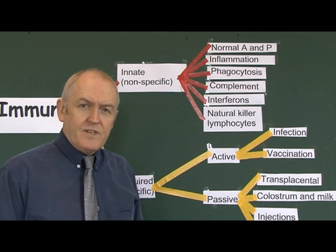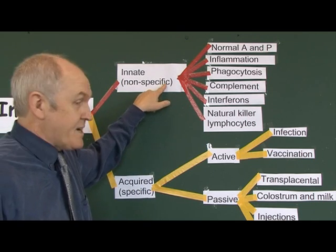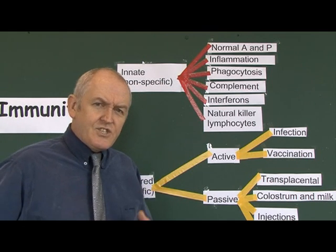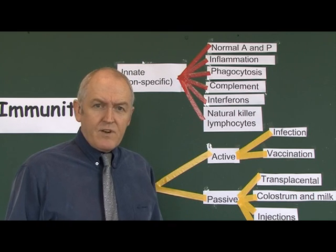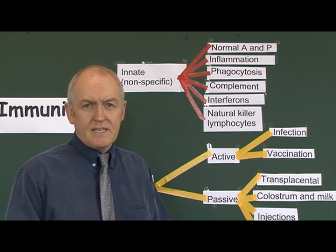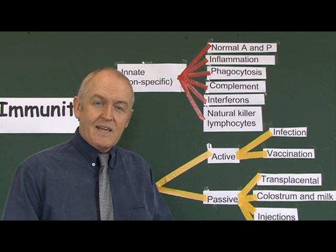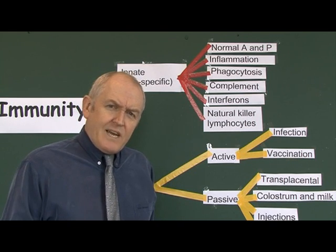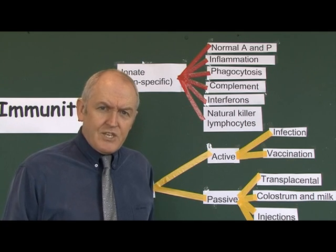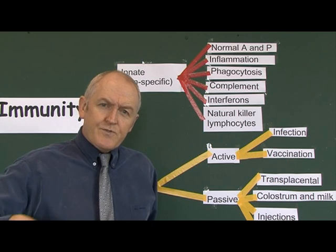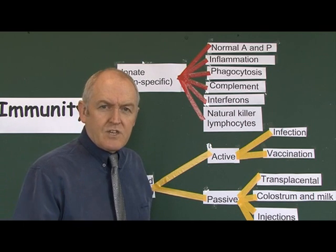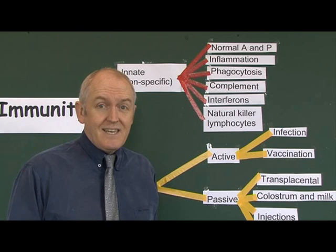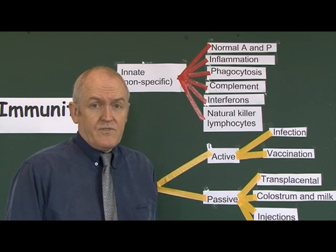The next component of the innate, non-specific immune system is inflammation — the inflammatory reaction. You may recognise inflammation by its classical signs: heat, pain, redness, swelling, and loss of function in a tissue. The inflammatory reaction is very protective. In inflammation you get vasodilation, and useful chemicals and white blood cells come out of the blood to mediate local immunity and promote local healing. Inflammation is the essential first stage of the healing process.